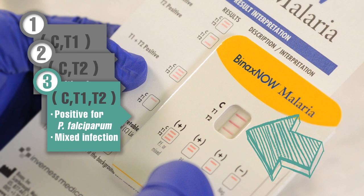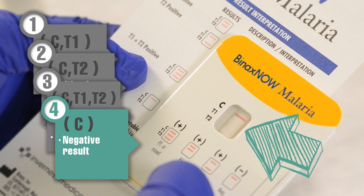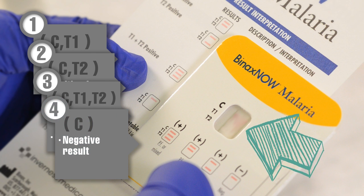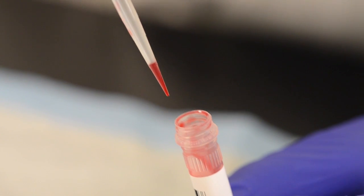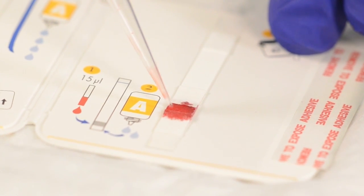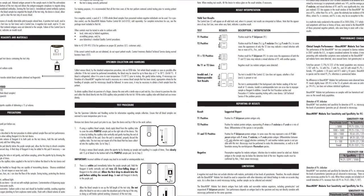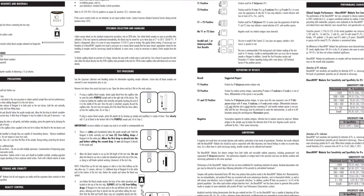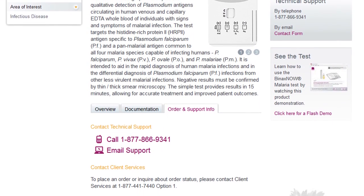If no T1 or T2 lines are visible, this indicates a negative result. If the background color hinders reading of the test result at 15 minutes, the test is uninterpretable and should be considered invalid. Invalid or uninterpretable tests can occur due to improper sample or reagent application. Consult the package insert or bench aid before testing with a new device. Call technical services at the number indicated on the insert if the problem persists.